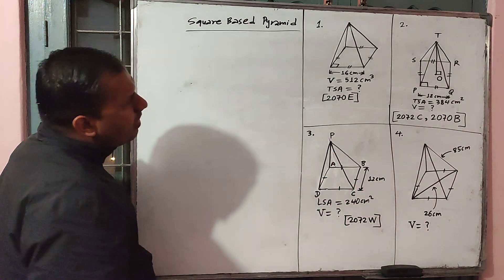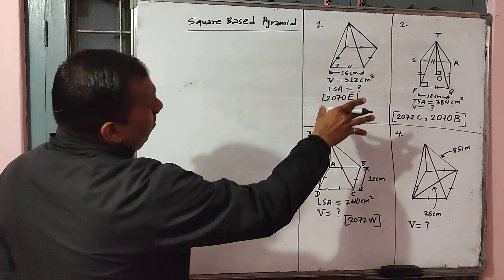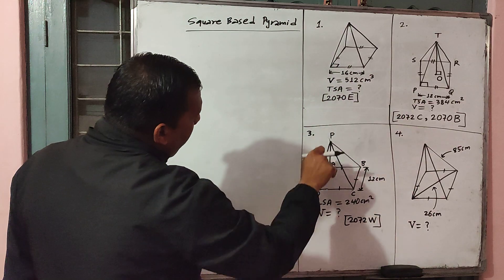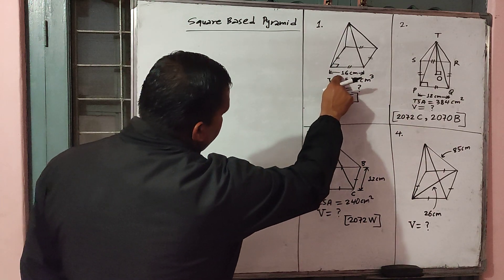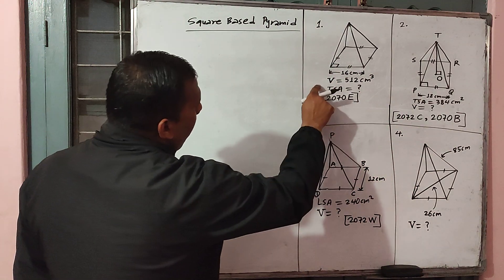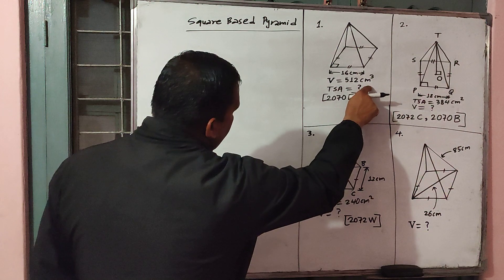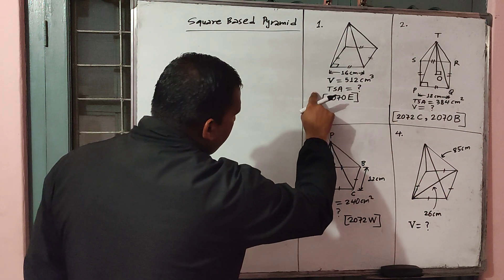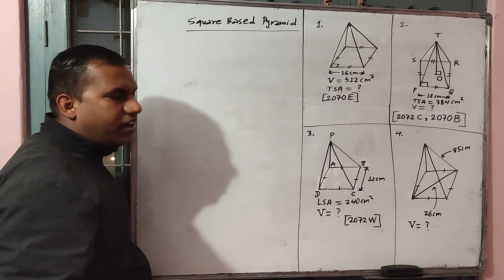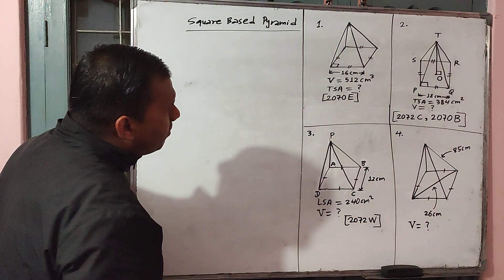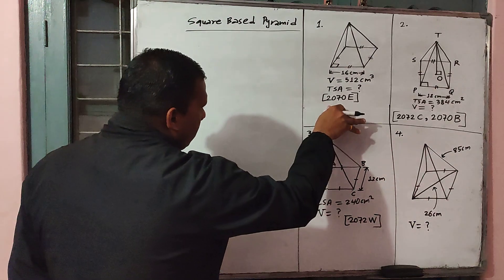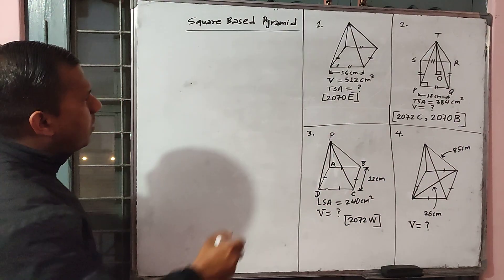Question number 1: we have given that a square base pyramid having length of side 16 cm, volume 512 cm cubed. We have to find the total surface area. This question was asked in 2017 in S.E.